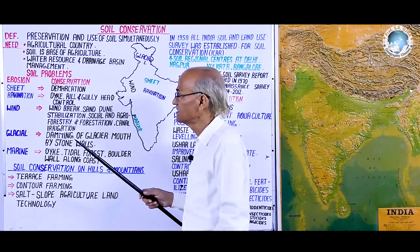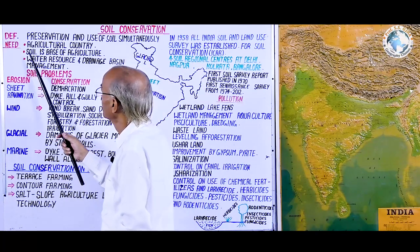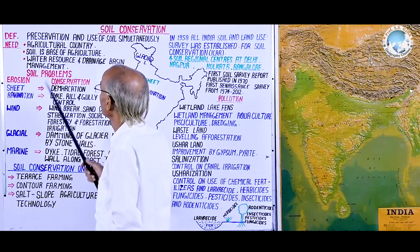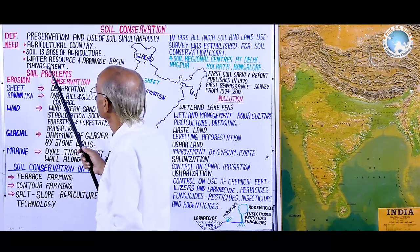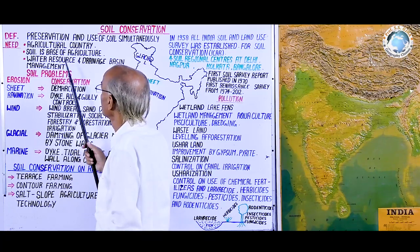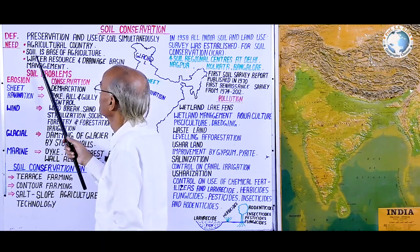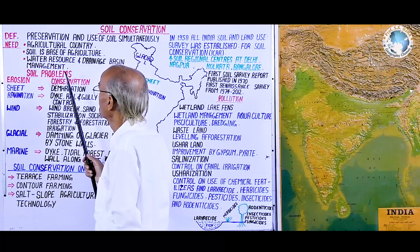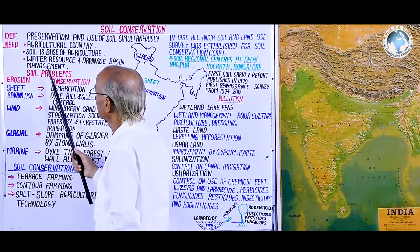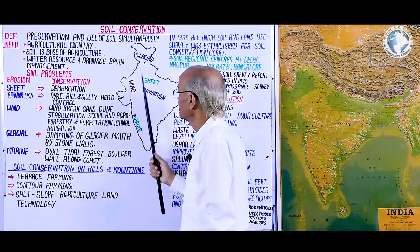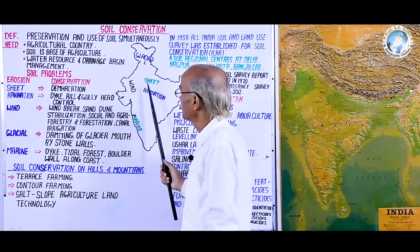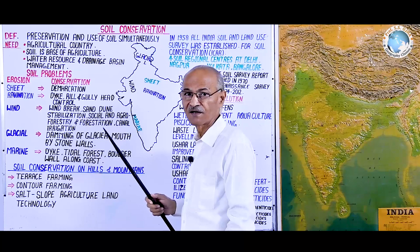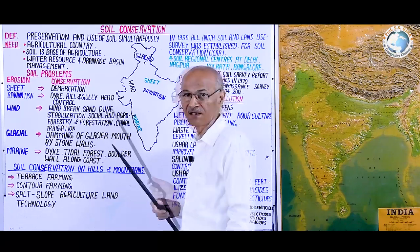What is the need of soil conservation in India? India is primarily an agricultural country, with more than 75 percent of the population depending on agriculture, and soil is the base of agriculture. For water resource and drainage basin management, drainage basins are demarcated and water as well as soil is managed for the betterment of agriculture in India.